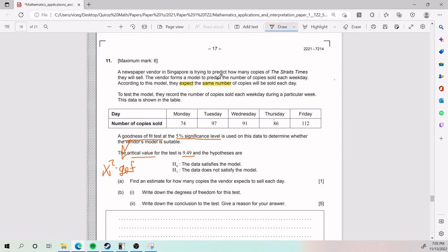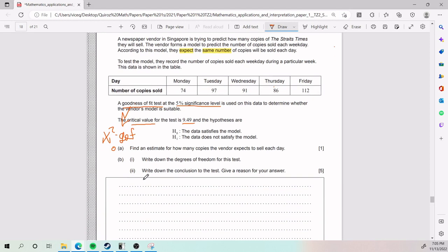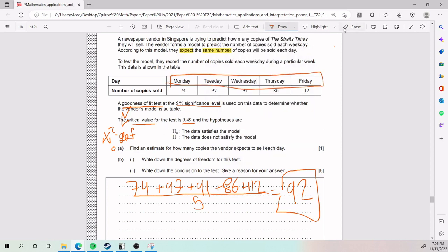What are our expected values? We expect the same number of copies will be sold each day. Part A actually has to do with that. We need to estimate how many copies the vendor expects to sell each day. So the way we do that is we take the actual observed amount, which is 74, 97, 91, 86, 112, and divide it by 5. So whatever that is, is going to be our expected value. We're going to put 92 here. That is for part A. It's an estimate because we are taking the mean of our observed values. We divide by 5 because we have 5 days Monday through Friday.